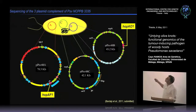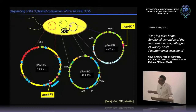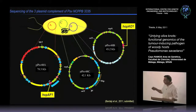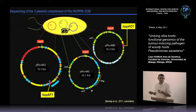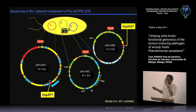Sequencing of the plasmids revealed two genes that we have already confirmed are translocated to the plant cell, and we are constructing the mutants. Mutants affected in these genes produce a smaller tumor with fast necrosis. All three plasmids share the same type of replicase, which in principle should make them incompatible. We are investigating why these three plasmids are maintained despite sharing the same replication system, in collaboration with a group in Madrid.